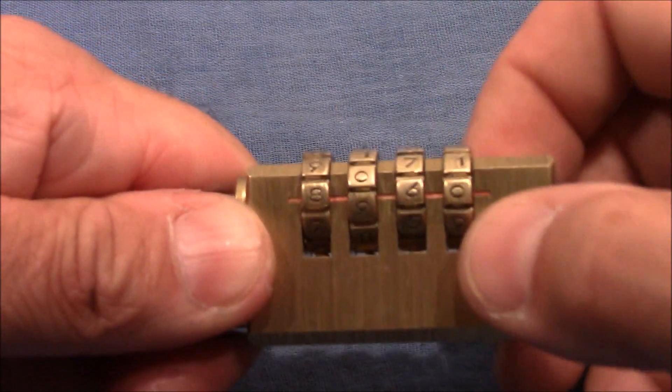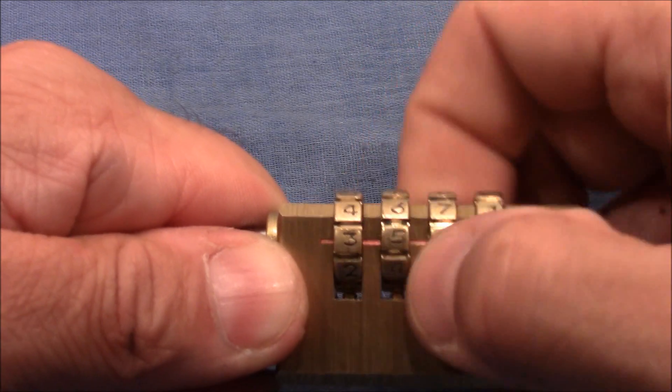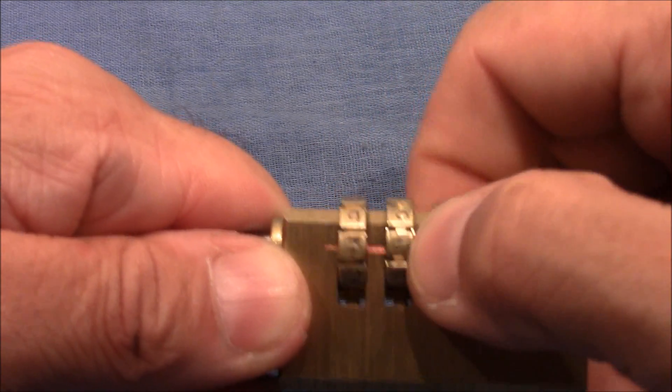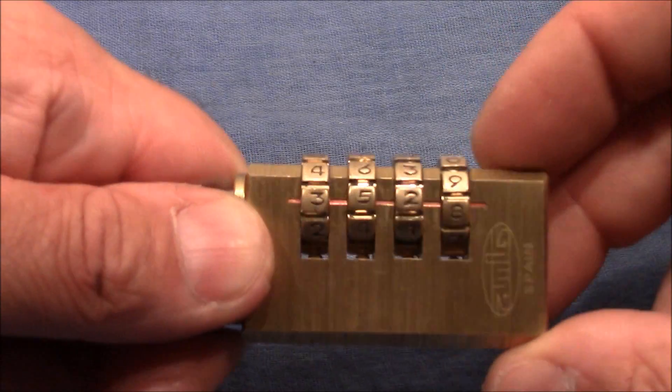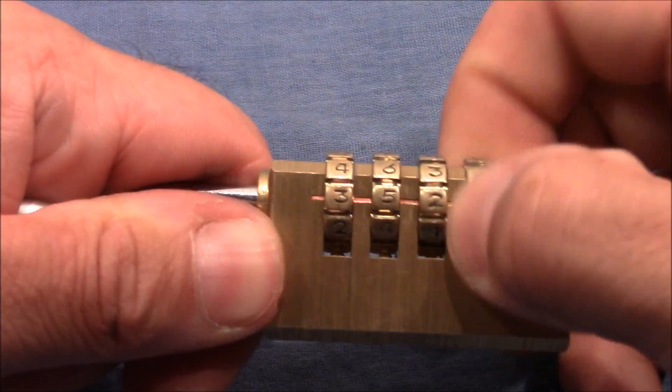Okay, I apply tension and search for the first binder. So this one binds, this one binds more. So wheel number four is the first binder, apply tension, move it, and it stops here.